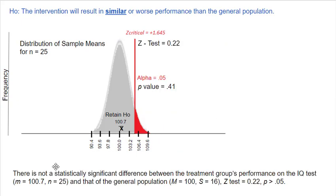If we were to write this up APA style, we would say: there is not a statistically significant difference between the treatment group's performance on the IQ test (M = 100.7, N = 25) and that of the general population (M = 100, S = 16), Z = 0.22, p > 0.05. Our Z test of 0.22 just wasn't big enough, and our p-value of 0.41 was too large — it needed to be 0.05 or less.